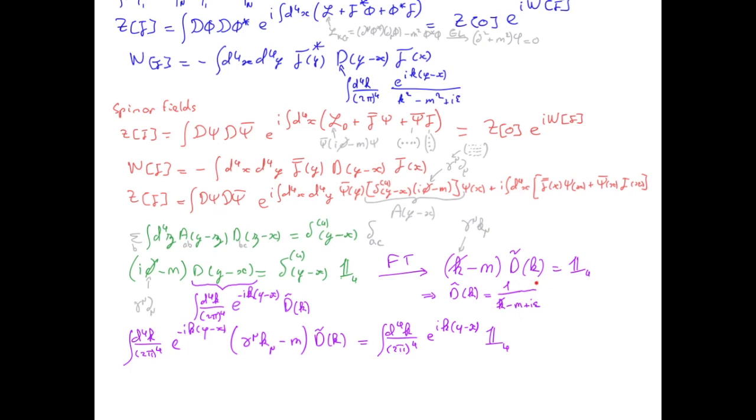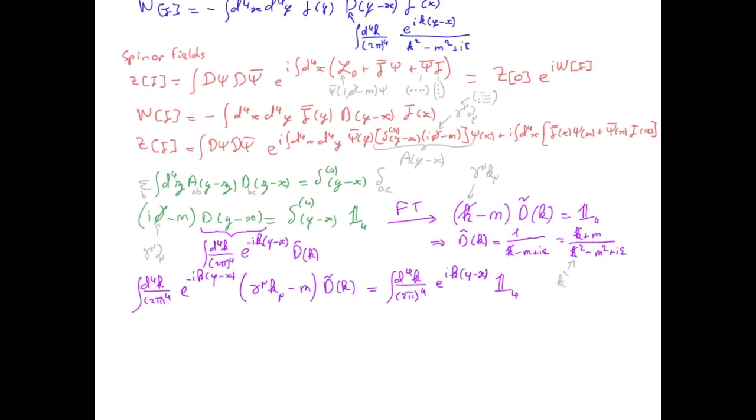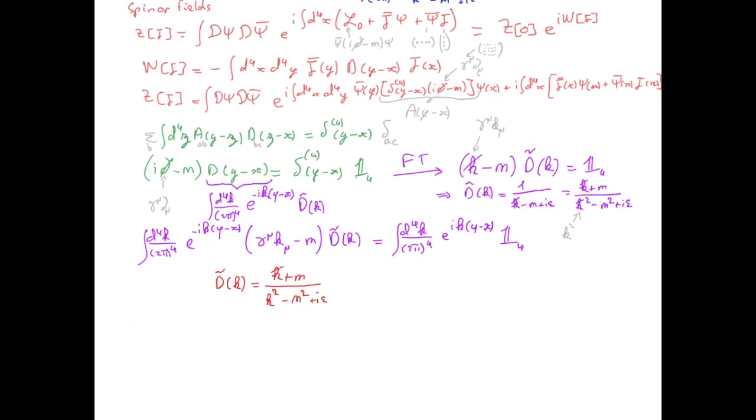We can rearrange this expression for the propagator by multiplying by k slash plus m both in the numerator and in the denominator. We already saw when we introduced Feynman notation that k slash squared is in fact just k squared. So we can now write a final expression for the Dirac propagator. That's in momentum space. And if I want the propagator in space-time, I just need to do an inverse Fourier transform. So this is all we need to describe the free propagation of a disturbance of a spin one-half field. And as usual, we see that this disturbance of the field will propagate efficiently when it is on mass shell when k squared is equal to m squared.